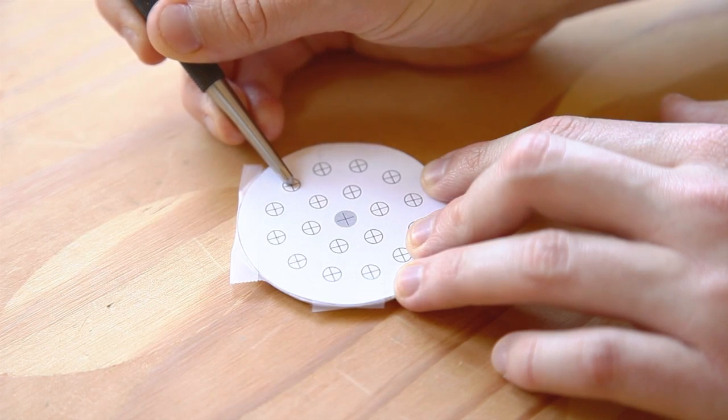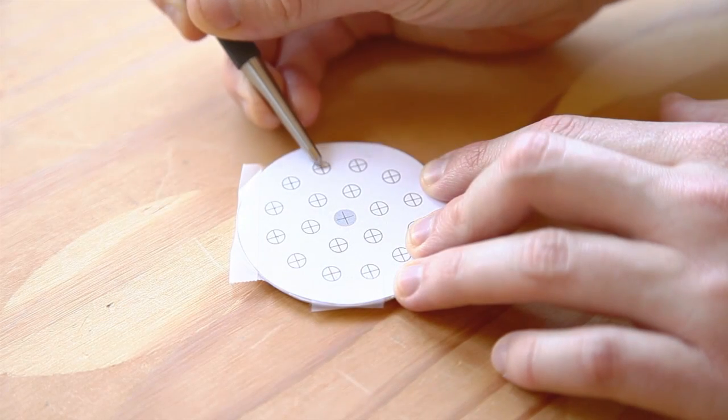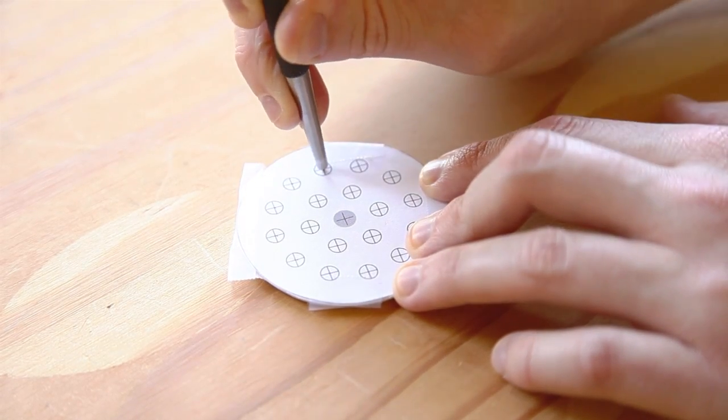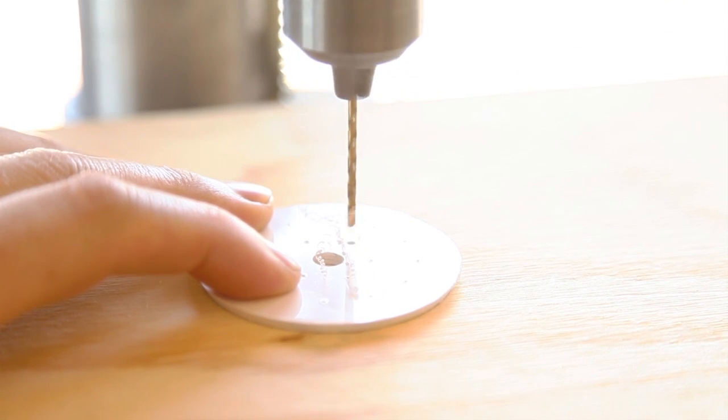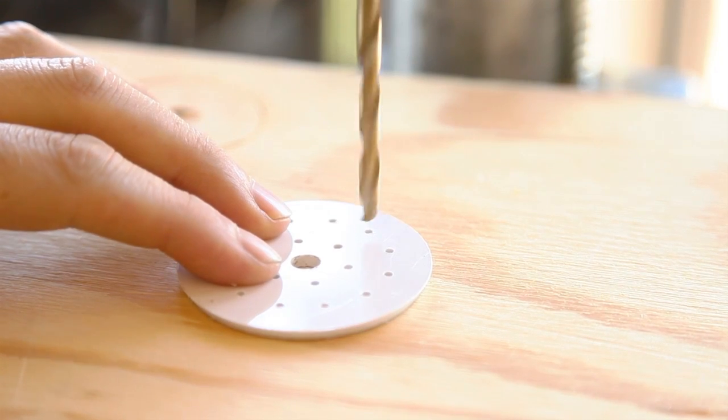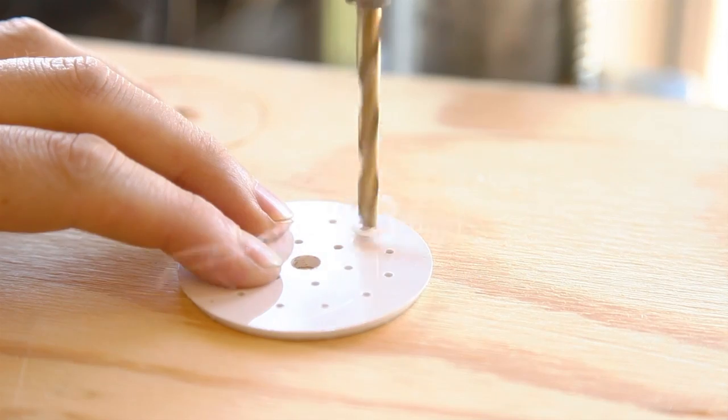Download the template from the project page, tape your template to the circle, and use a punch to poke through the center of each hole. Remove the paper and drill a small pilot hole through each indentation. Then drill a larger hole that will accept the LEDs.